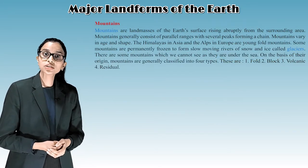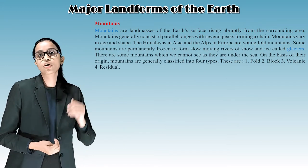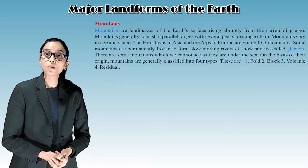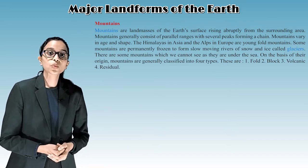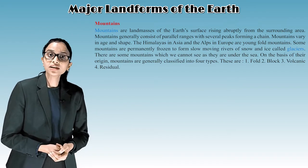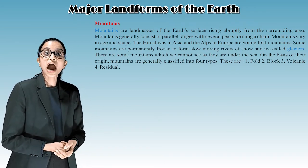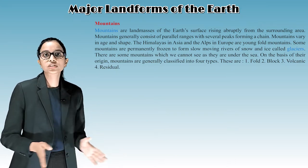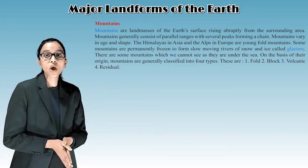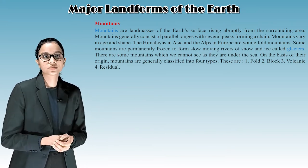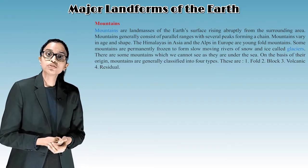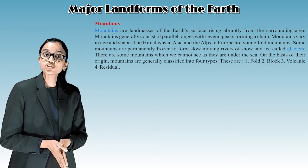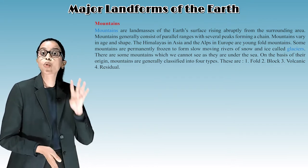Mountains are landmasses of the earth's surface rising abruptly from the surrounding area. Mountains generally consist of parallel ranges with several peaks forming a chain. They vary in age and shape. The Himalayas in Asia and the Alps in Europe are young fold mountains. Some mountains are permanently frozen to form slow-moving rivers of snow and ice called glaciers. There are also mountains under the sea.